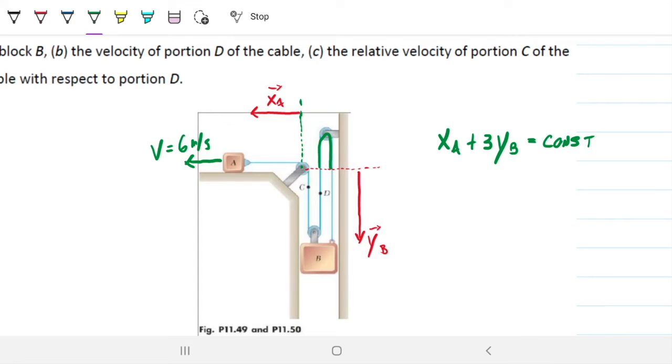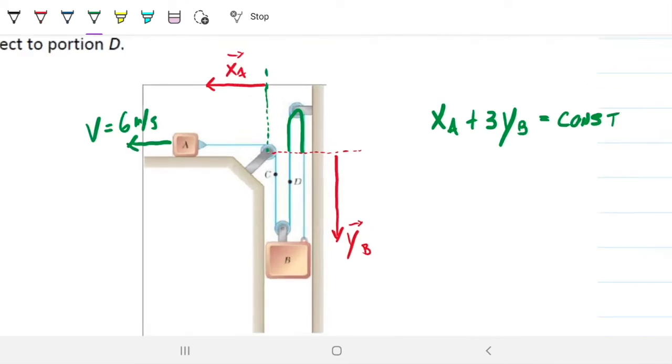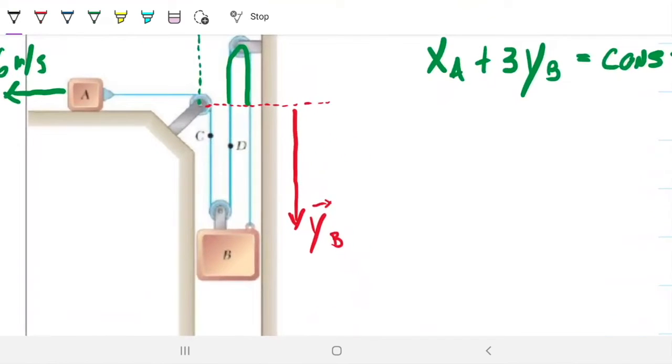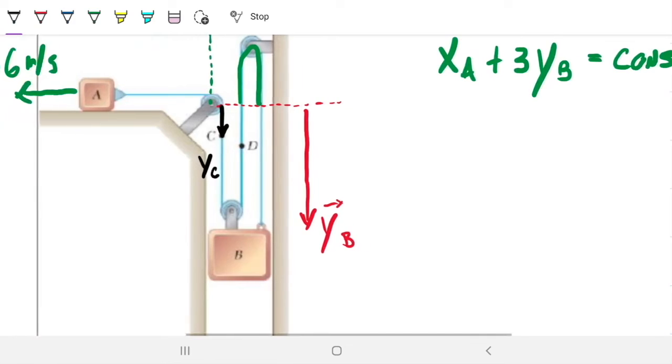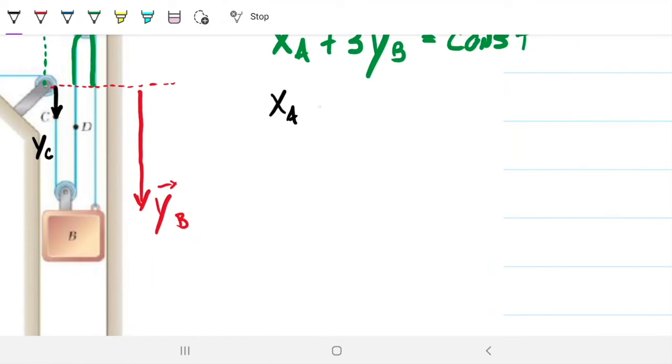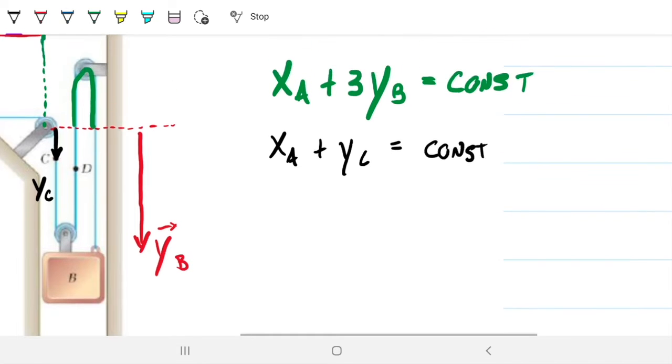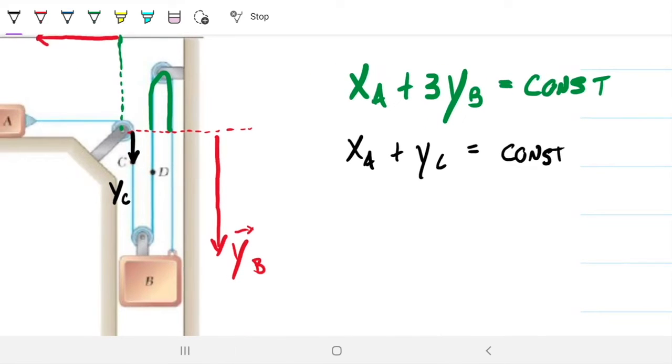What else? If I take my little, create another vector, which is from my system to C, so it'll be a vector like this. And I'll call that YC. Then I can create another equation relating the distance of the rope from here to here. That's also going to be a constant. In other words, XA plus YC also has to be a constant, a different constant, obviously, because this is going to be greater than this. But that's not what I'm interested in, because I'm interested in having those equations set up so I can find the velocity equations.